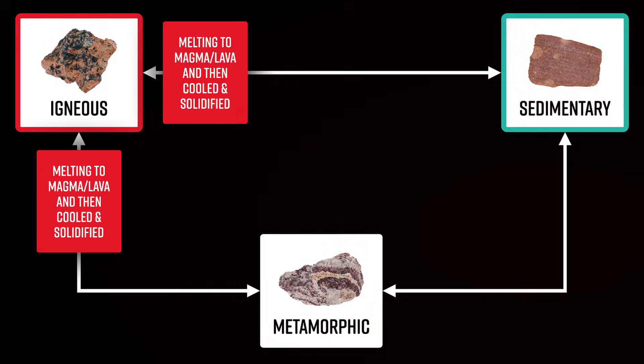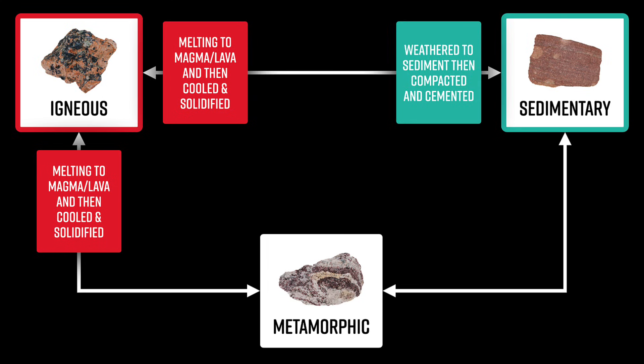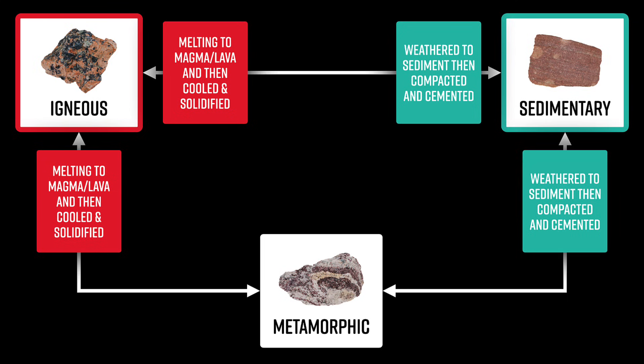In order for that process to happen, a few processes need to occur on the surface. For example, if an igneous rock is exposed to weathering and erosion from wind and ice and rain and other conditions on the surface, turned into sediment, and then that sediment is compacted and cemented together, our igneous rock can become sedimentary. Of course, the same is true with metamorphic rocks — they too can be weathered, eroded, and then compacted and cemented, forming a sedimentary rock.